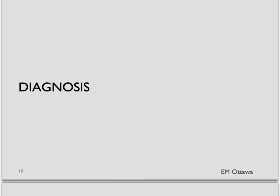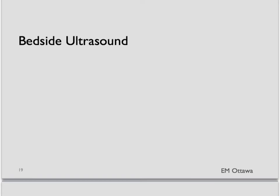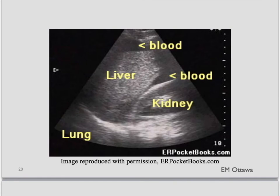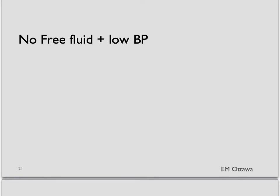For diagnosis, we first use a bedside ultrasound. On the bedside ultrasound, the first thing we look for is free fluid in the abdomen. If there is free fluid, that means the ectopic pregnancy has ruptured and we are seeing blood freely flowing in the abdomen — we need to call the specialist right away. In this ultrasound image, you can see free fluid in Morrison's pouch between the liver and the kidney. What if you still have a hypotensive patient but the ultrasound does not show free fluid? If your index of suspicion is high, we will still call the obstetrician right away, because sometimes the ultrasound might be falsely negative if not a lot of free fluid has collected yet.